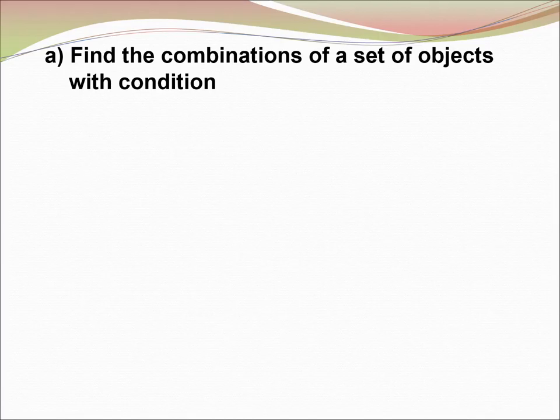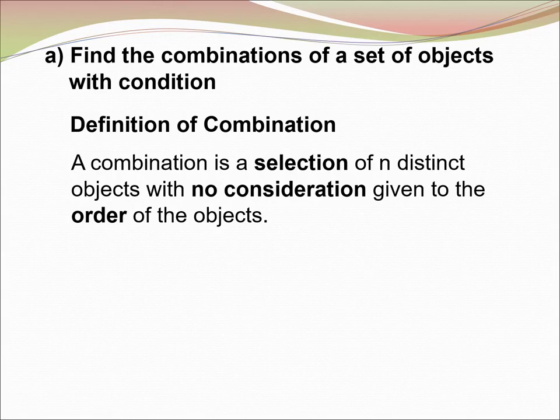(a) Find the combination of a set of objects with conditions. Definition of Combination: A combination is the selection of n distinct objects with no consideration given to the order of the object.